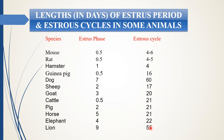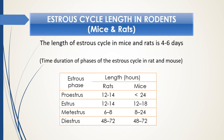It is interesting to note that estrus cycle length varies widely — from just a few days, as in the case of hamster at 4 days, to 55 days in lion. The estrus phase, also called the heat period, is very important because only during this phase do females allow males for mating.